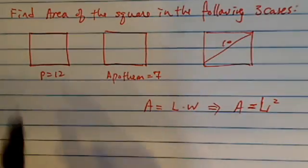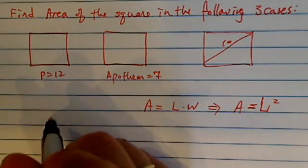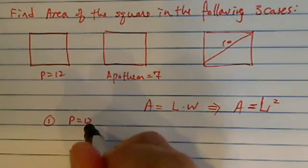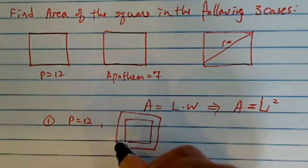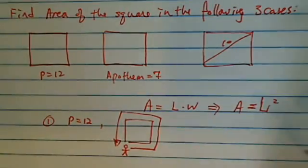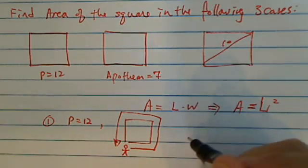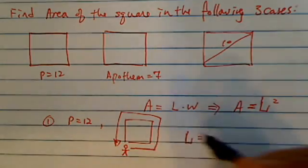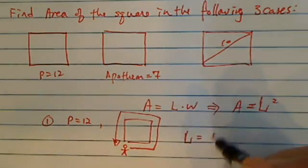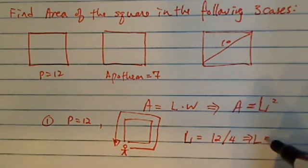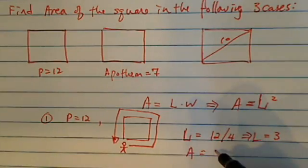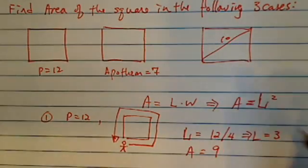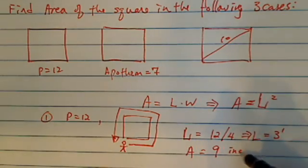First case, we have perimeter equal to 12. Case one, perimeter equal to 12. Perimeter, as you remember, thinking yourself as the person, perimeter is basically you walk around and see how long the square is, or how long it takes you to make the square. So for each one of the case, each side, since there's four sides are the same, and then there's 12 divided by 4, or my length is equal to 3. From there, it's pretty easy. Area equal to 9 inches squared.